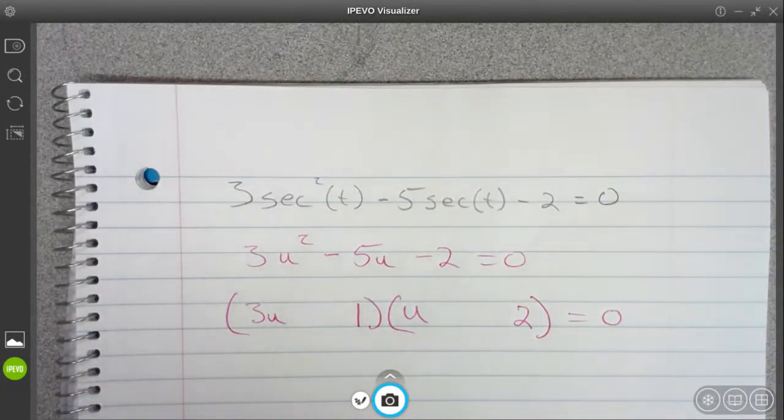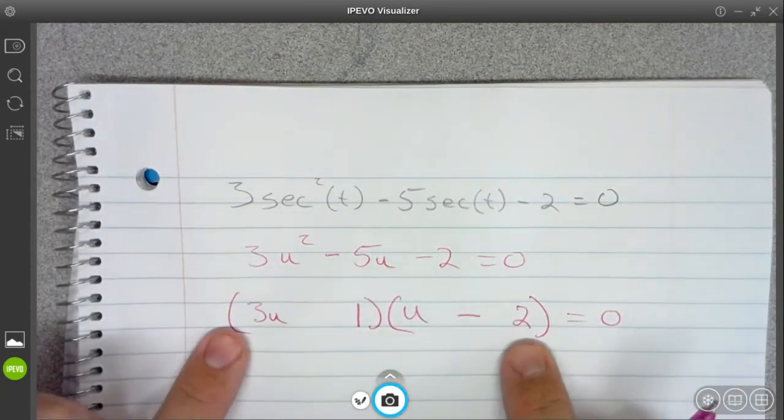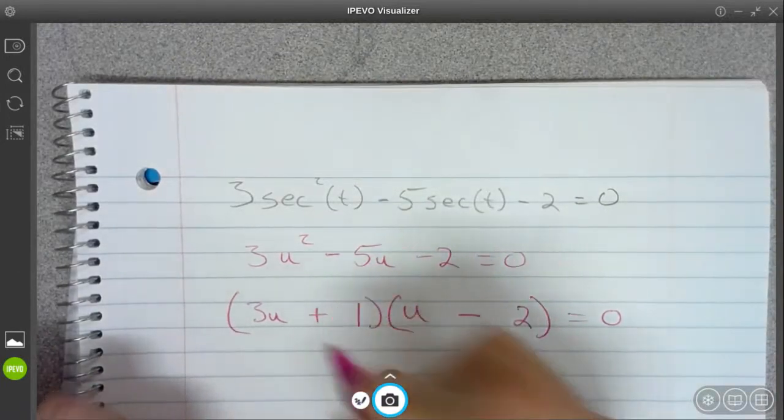All right, I need it to be a negative 5 in the middle. So I want my 6 right here. I want this one to be negative and this one to be positive. Nice.